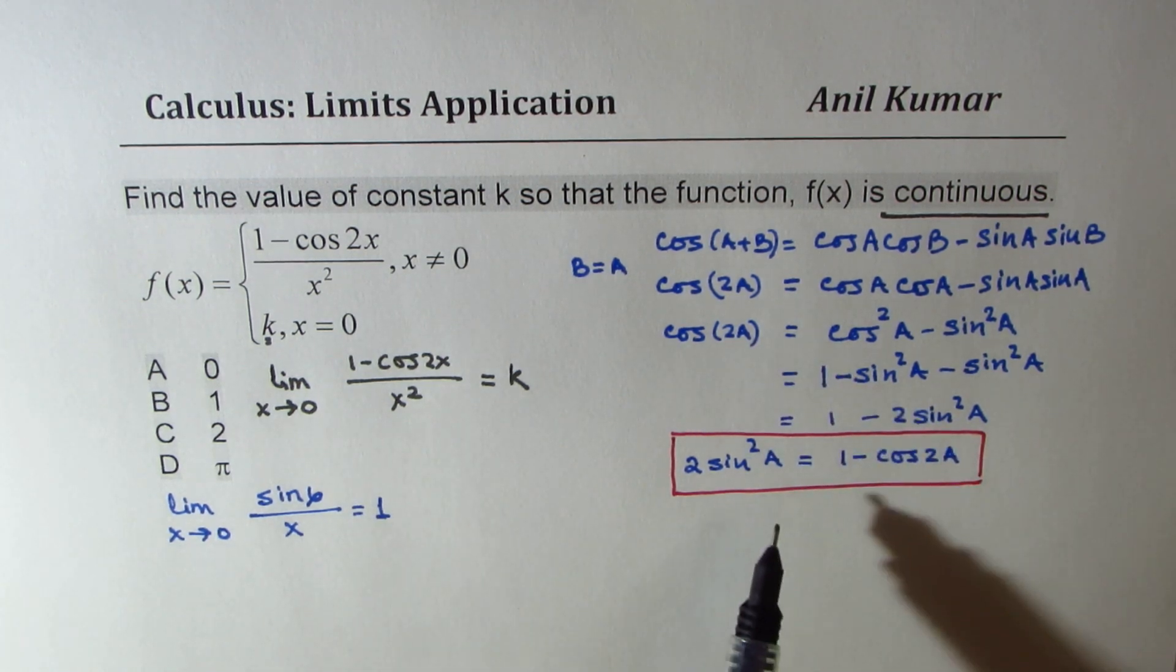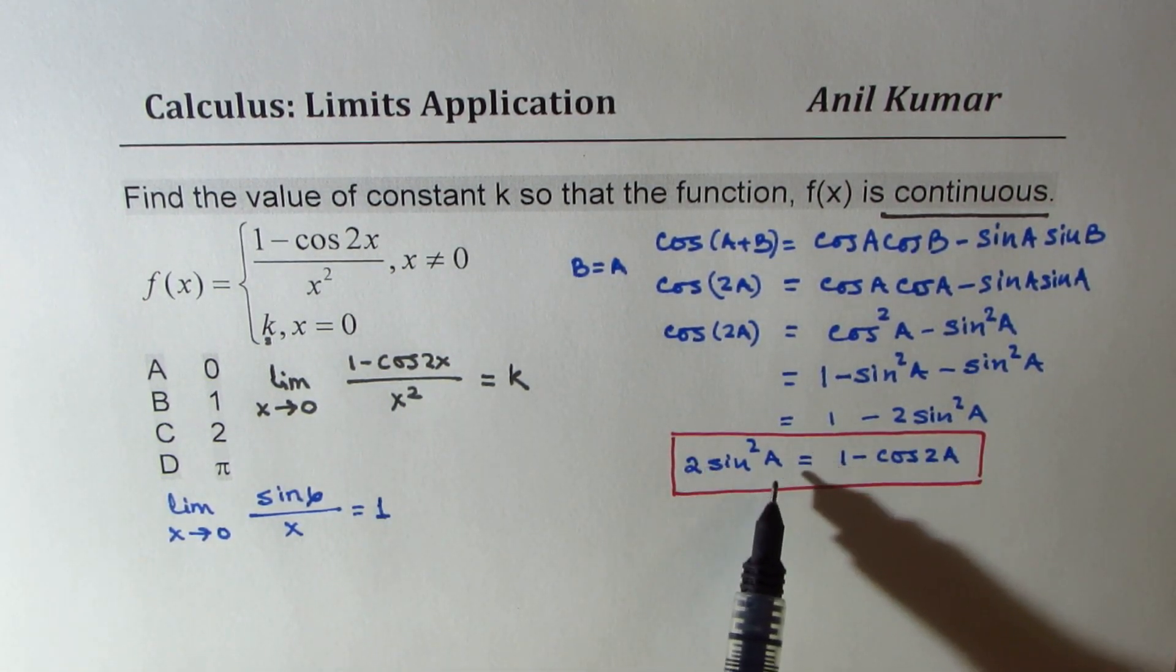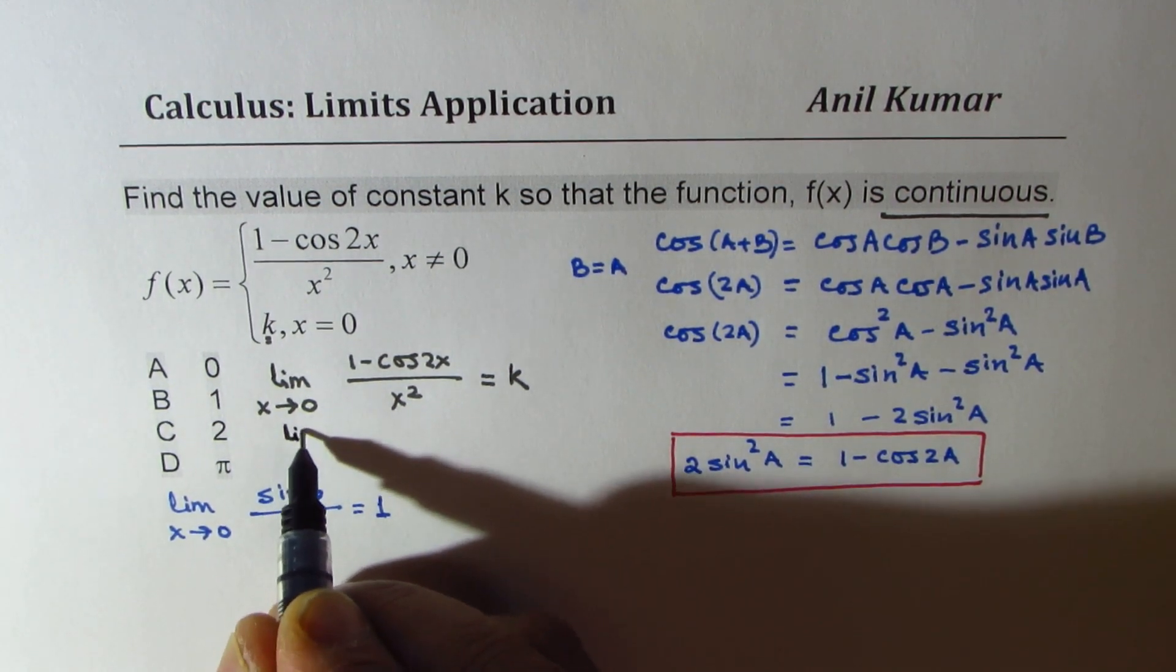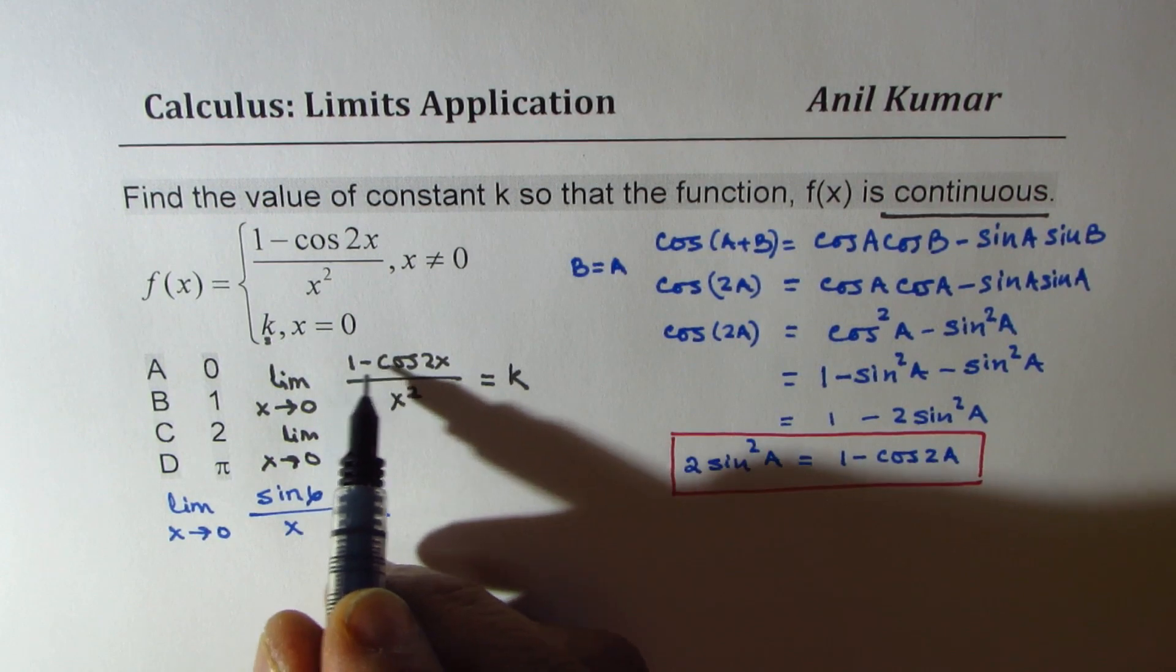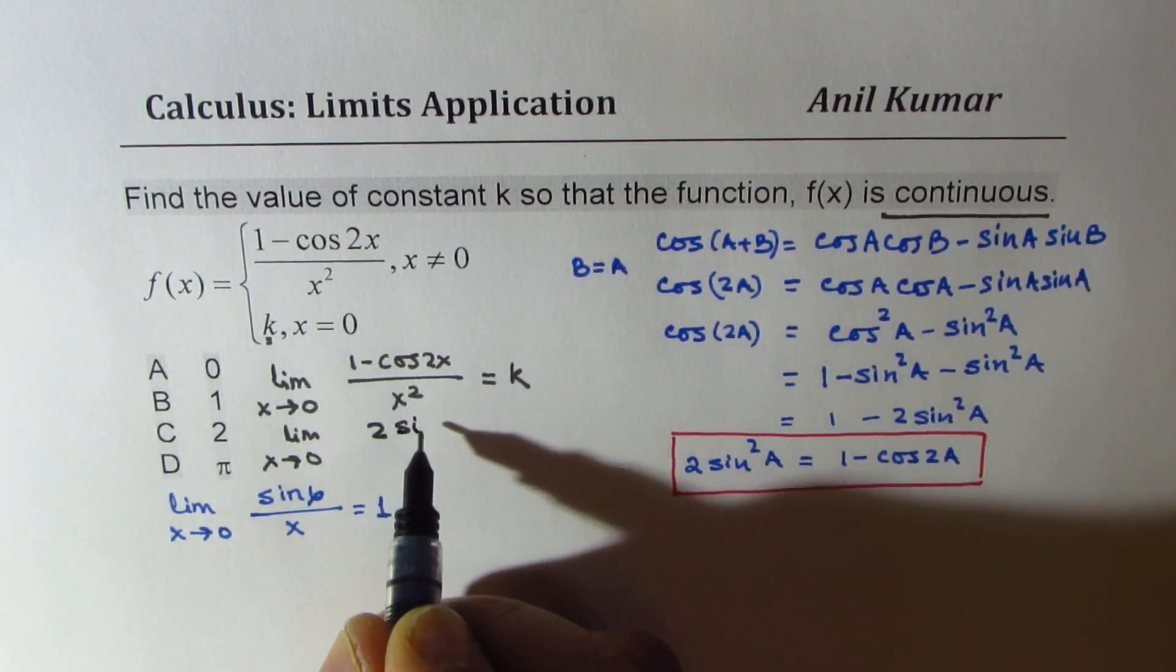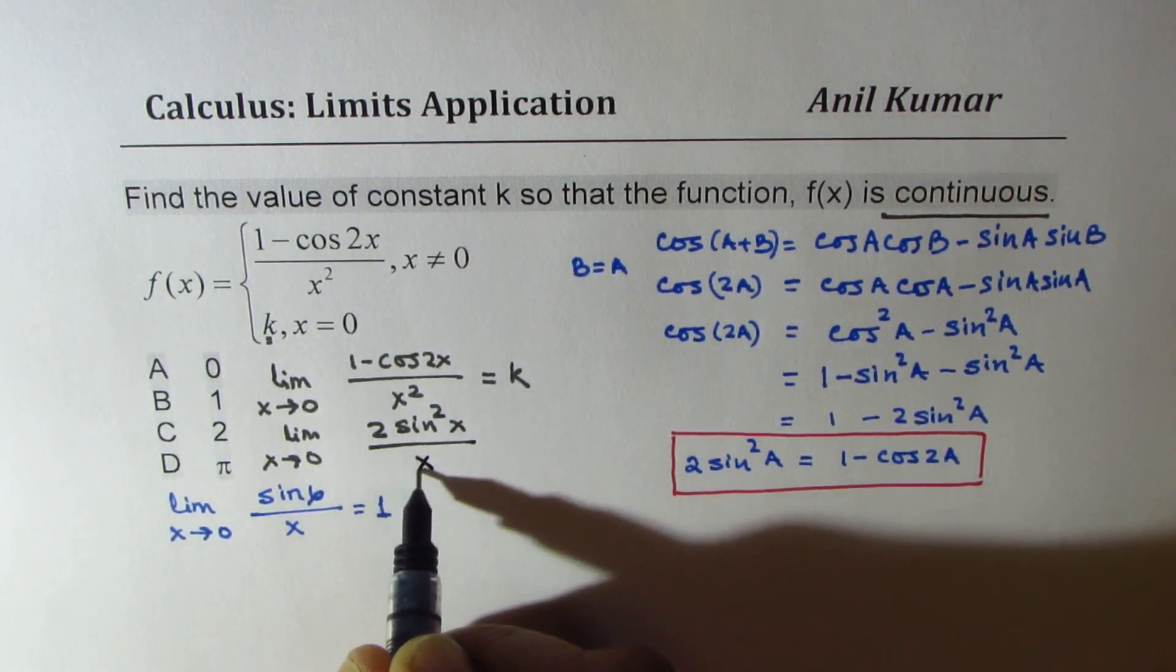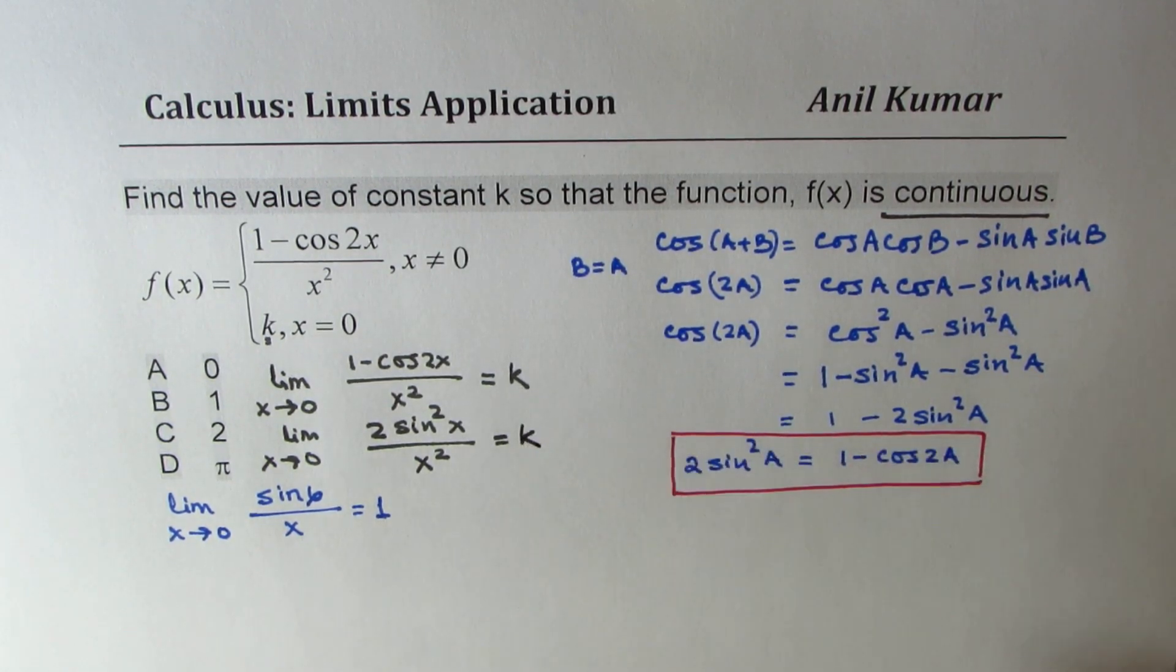Now, we have already seen that 1 minus cos 2x can be written as 2 sin squared x, right? So we could write this as limit x approaches 0 of the numerator being 2 sin squared x over x squared, and that should be equal to k. So that is the value of k which we are trying to find.